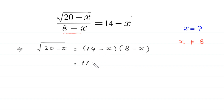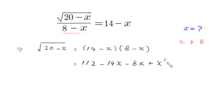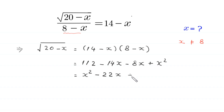The left-hand side remains the same, and we expand the right-hand side: 14 times 8 is 112, 14 times negative x is negative 14x, negative x times 8 is negative 8x, and negative x times negative x is x squared. Rearranging: x squared minus 22x plus 112.